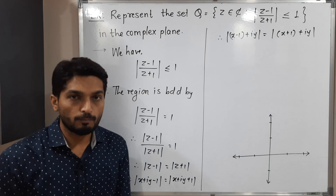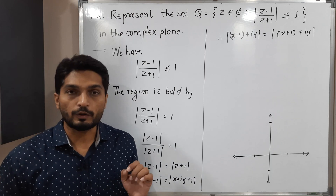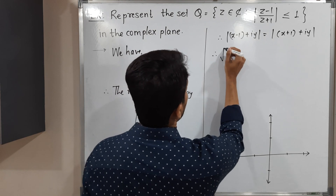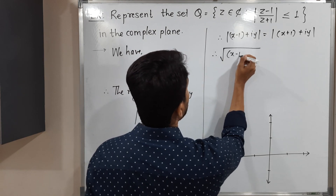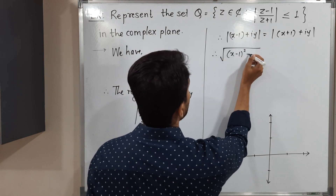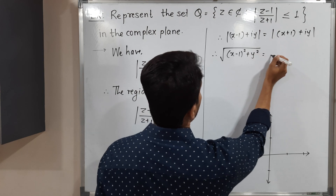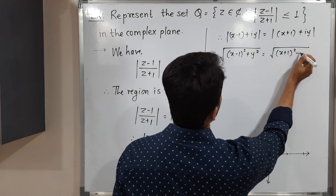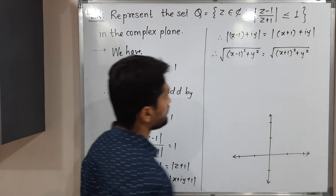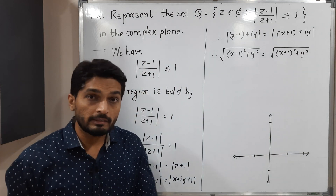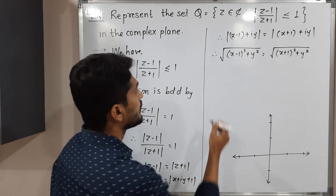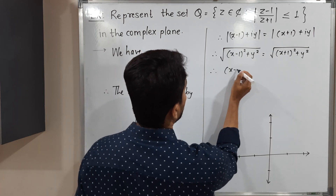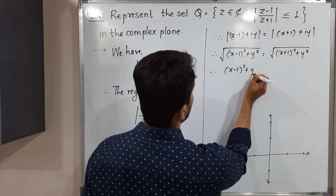Using the definition of modulus — square root of (real part squared plus imaginary part squared) — we get: square root of (X minus 1)² plus Y² equals square root of (X plus 1)² plus Y². To remove the square roots, we take the square of both sides.